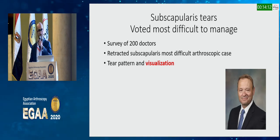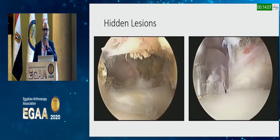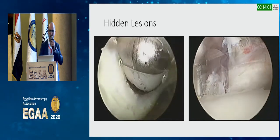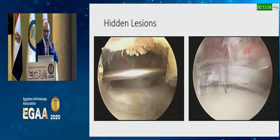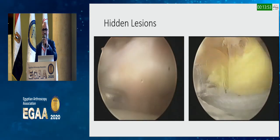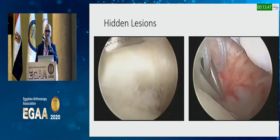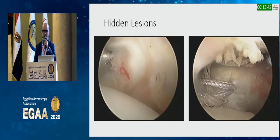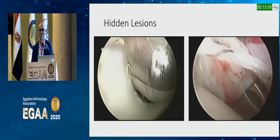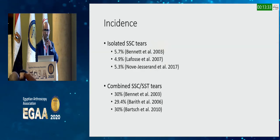Hopefully by the end of this lecture I'll be able to give you a few pearls and tips on how to do it. The lesion on the left — when I started arthroscopy I would not repair this lesion, I wouldn't even notice it. But nowadays it's considered a high-grade partial tear of the subscap and it should be repaired.